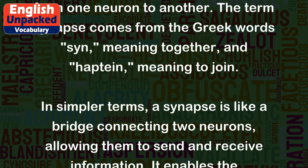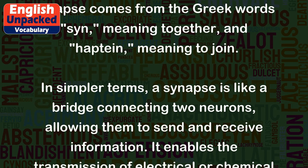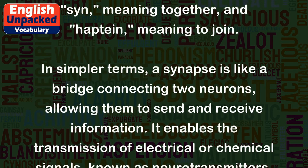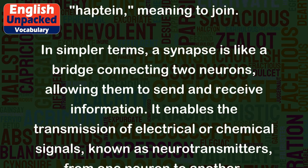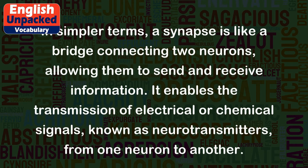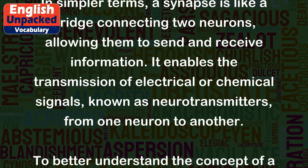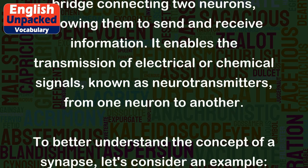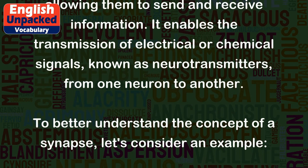In simpler terms, a synapse is like a bridge connecting two neurons, allowing them to send and receive information. It enables the transmission of electrical or chemical signals, known as neurotransmitters, from one neuron to another.